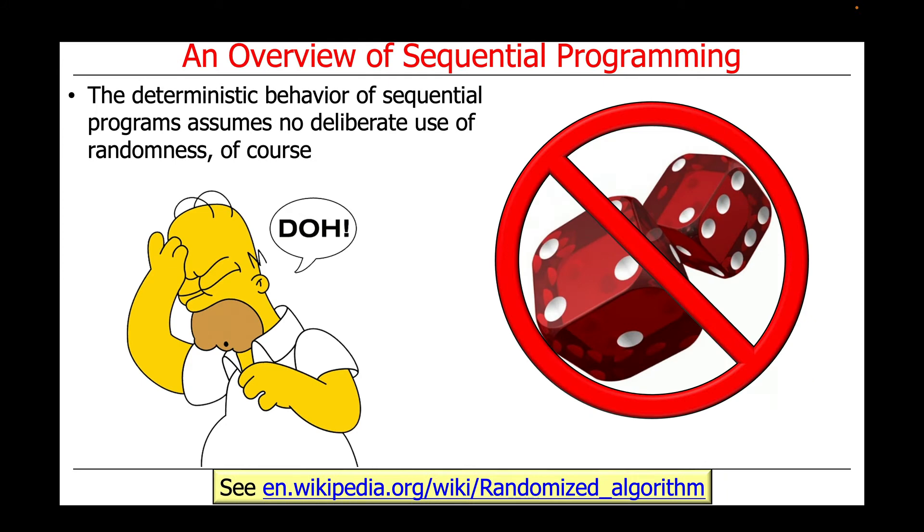Of course, this deterministic behavior is premised on the fact that there's no deliberate use of randomness. You can use random numbers and random algorithms for various things, but we're assuming for this discussion that that's not what's happening. The code is taking steps that are not random.